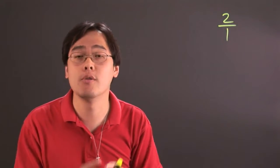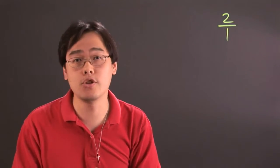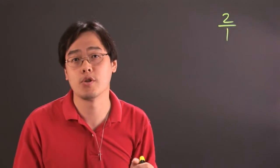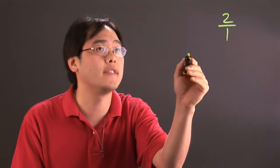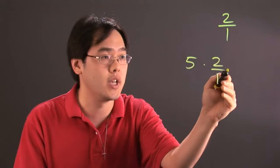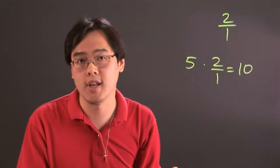So when you're multiplying by a 2 to 1 ratio, that means you're multiplying by 2. So whether it be a whole number or a fraction, multiplying by 2 is going to be pretty straightforward. So if you have, let's just say, 5 and you're multiplying by 2 to 1, that's going to end up giving you 10 at the very end.